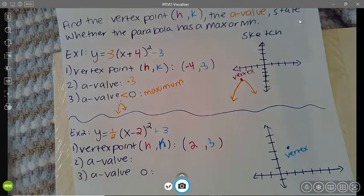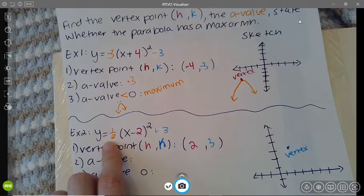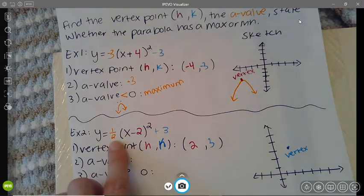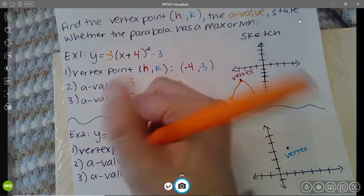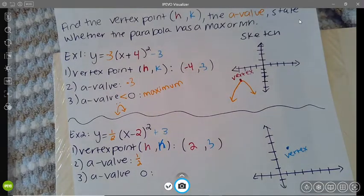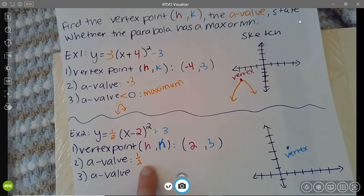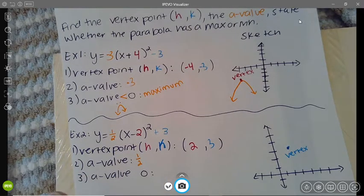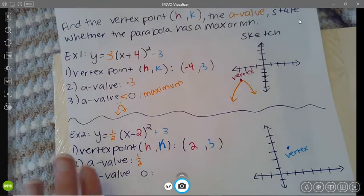The a-value is the number right in front, before the parentheses, which in this case is 1/2. So the a-value is 1/2. Is 1/2 a positive or negative number? It is a positive number. I know it's a fraction, but fractions can be positive.